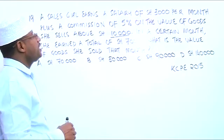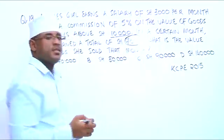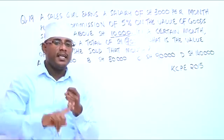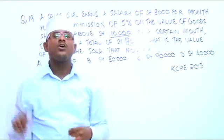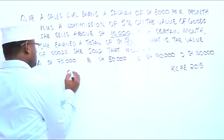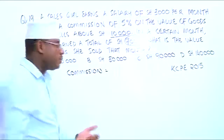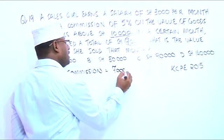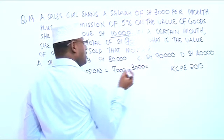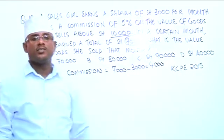The question tells us that in one month she earned a total of $7,000. From that $7,000, we have salary, which is $3,000, and also commission. If you want to get how much commission she earned this month, you can say: commission equals the total amount she earned, which is $7,000, less the salary of $3,000. So the commission is $7,000 minus $3,000, which is $4,000.